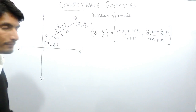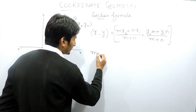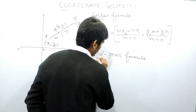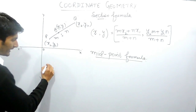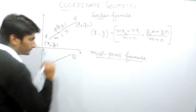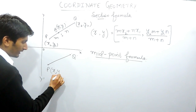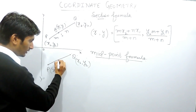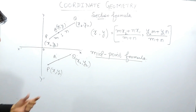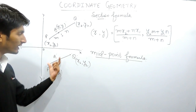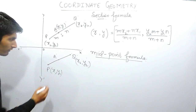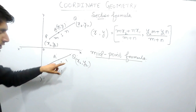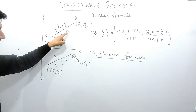This is how you can remember the section formula. There is another formula known as the midpoint formula. In this case, if there are two points P and Q, with coordinates x1, y1 and x2, y2 respectively, and there is a point A on this line which divides the line in equal proportion — meaning both distances are equal — then obviously the ratio will be 1 to 1. So the value of m is 1 and the value of n is also 1.